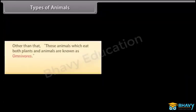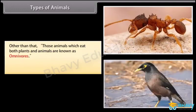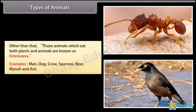Those animals which eat both plants and animals are known as omnivores. Examples: Man, Dog, Crow, Sparrow, Bear, Myna, and Ant.